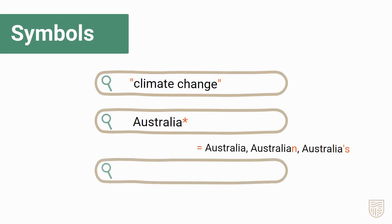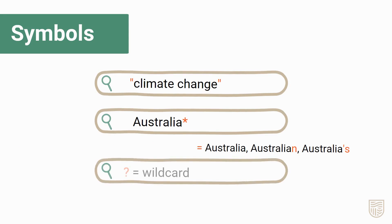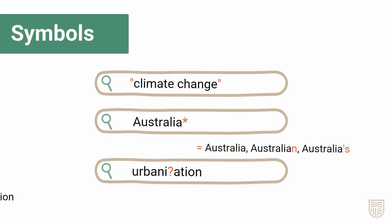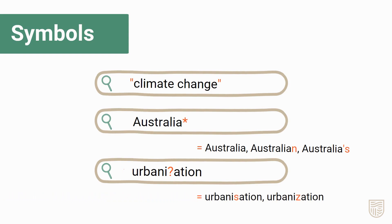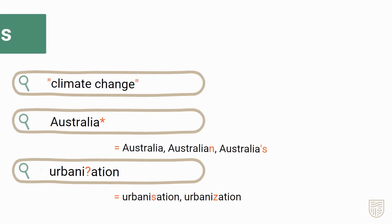Sometimes your keywords might have multiple spellings, such as British versus American. You can replace the varying letter with the wildcard symbol. An example is to add a question mark to replace the S or Z in urbanisation. Many databases use a question mark as the wildcard, but others use different symbols. Check the database help section to see which symbol to use.